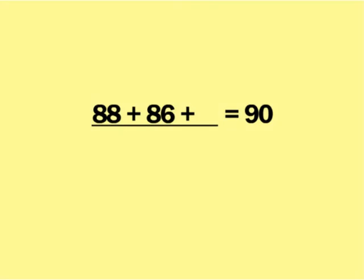The trick to these questions is to remember that the final is weighted double, so it's going to count twice. It's going to count as two tests, and that means you've got four test grades that you're looking at. You have to account for that final being weighted double when you set up your equation.